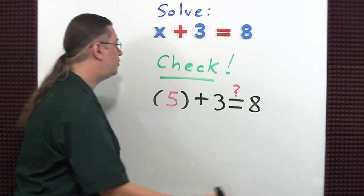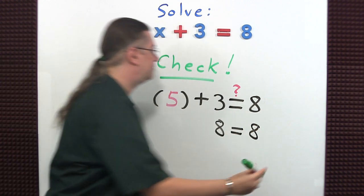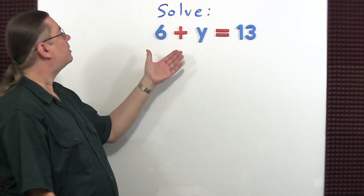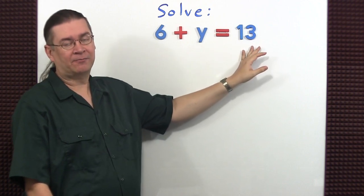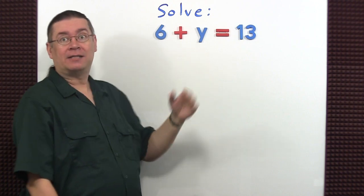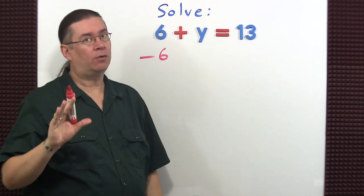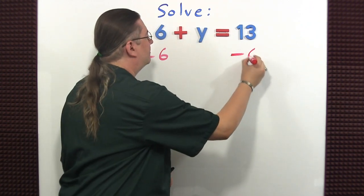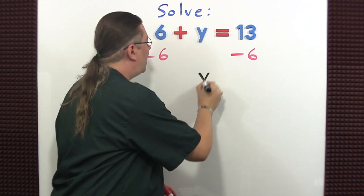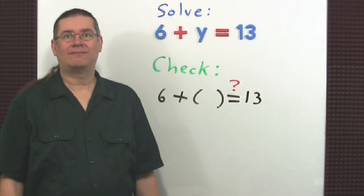Now let's solve for the variable y in this equation: 6 plus y equals 13. Let's try using the vertical format to solve. 6 is being added to y, so we do the opposite operation. Let's subtract 6, but what you do to one side you have to do to the other side. 6 minus 6 is 0, so y equals 7.